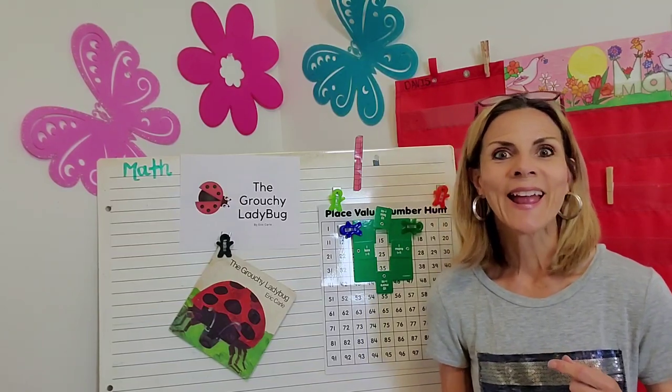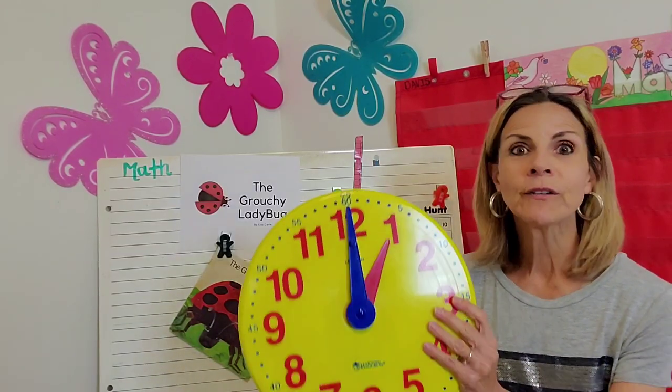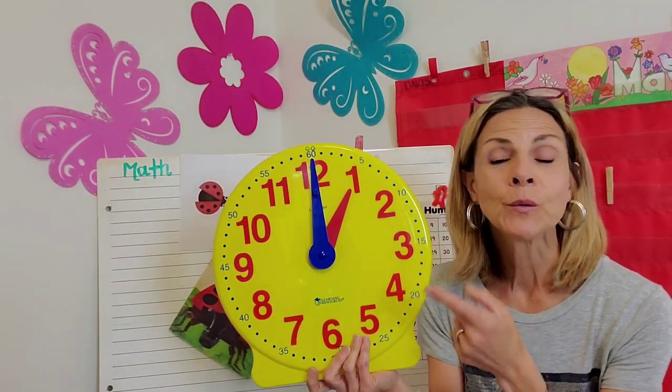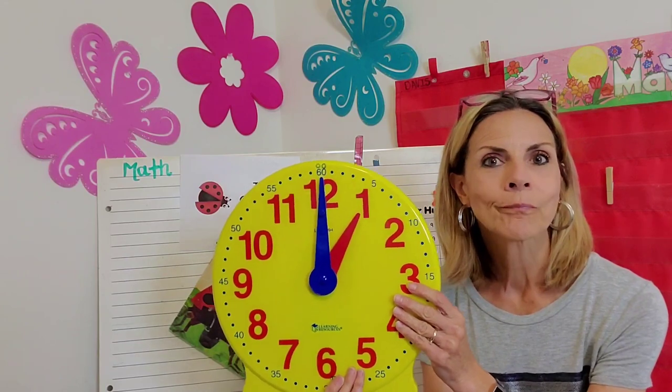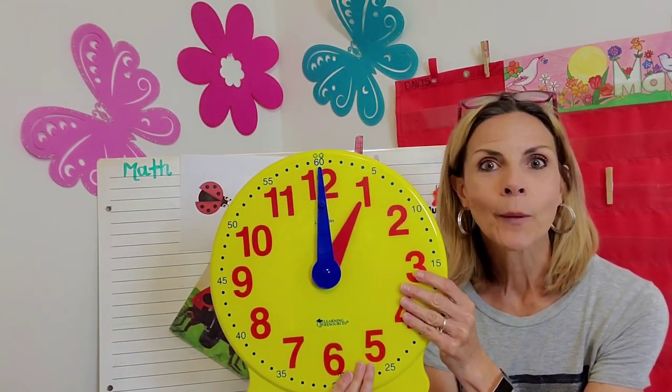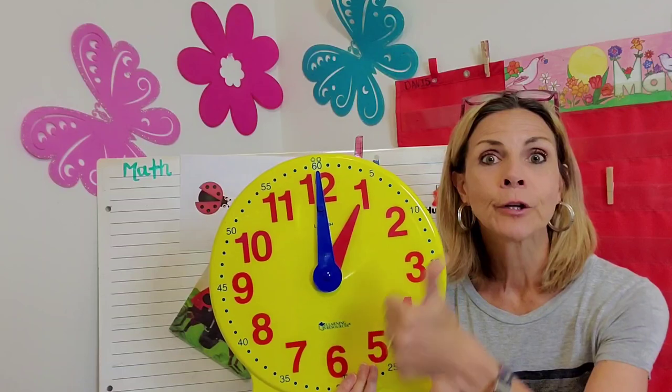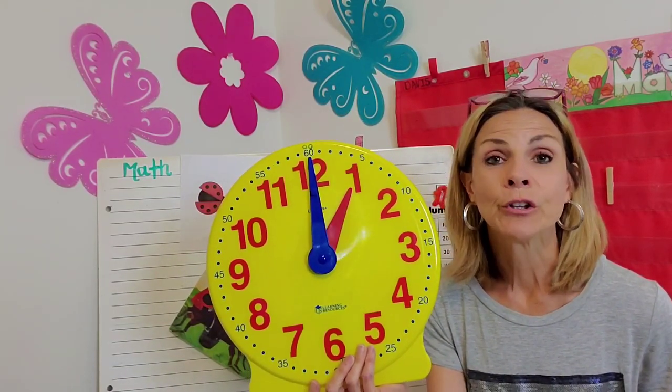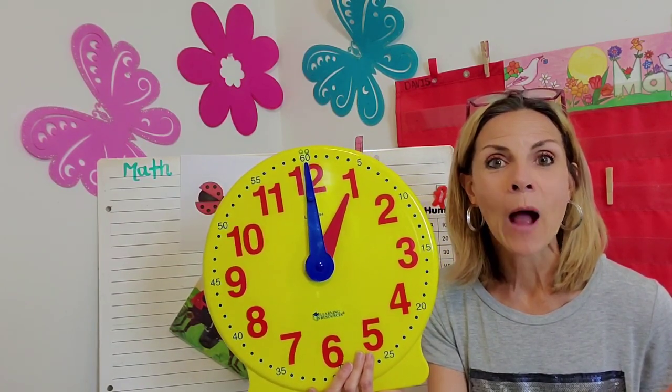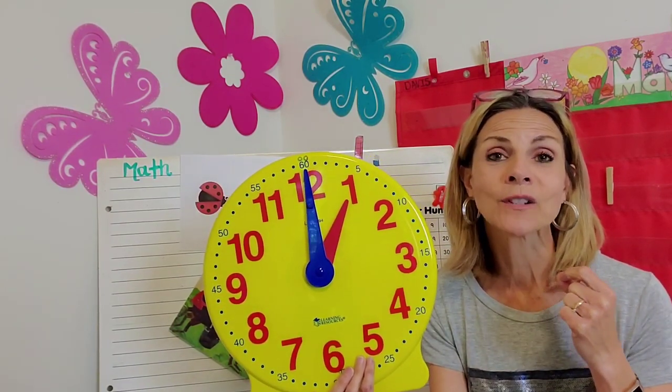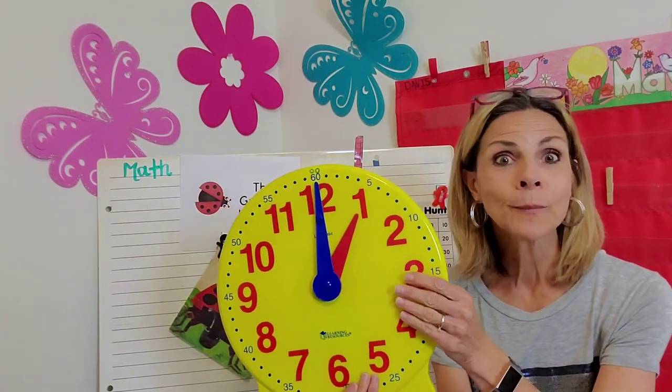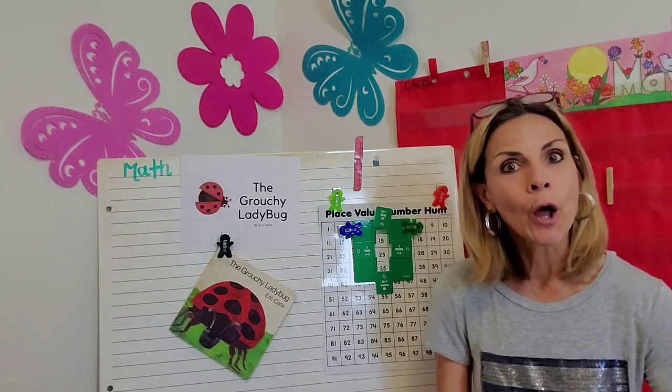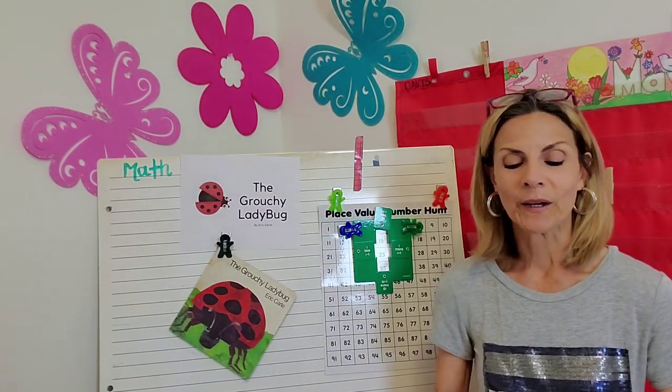And so, today, for our first activity, I want you to get out your little mini clock, and I want you to be thinking about every hour that the grouchy ladybug flew off. Each time he flew away, he met a new creature. Let's practice hour time on the hour skills. Get that little mini clock.